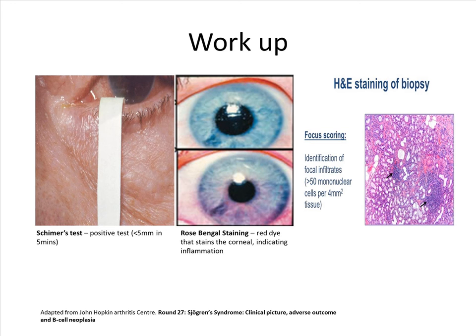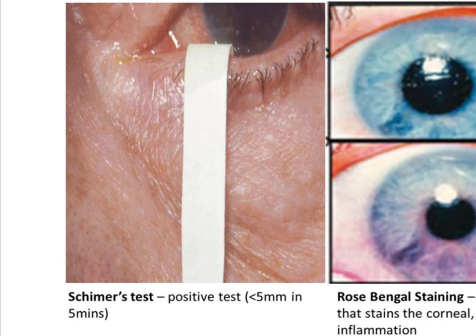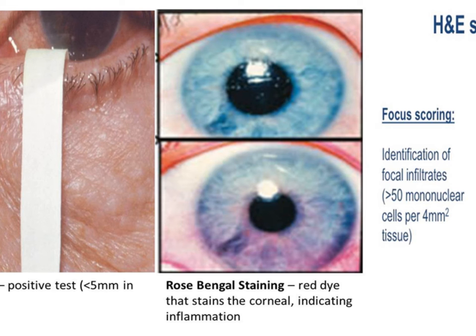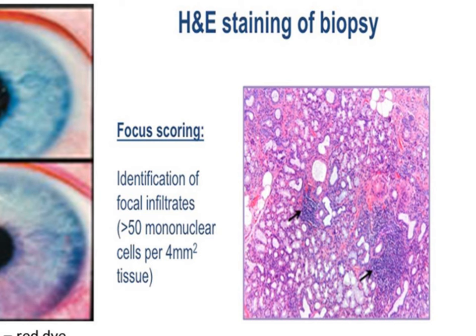Here are some pictures of the Schirmer's test and corneal staining. This is a picture of the Schirmer's tear strip measuring tear production; if the tear production is less than 5 mm in five minutes, this is considered a positive Schirmer's test. This is a picture of rose bengal staining indicating inflammation of the cornea. This is a lip biopsy showing focal infiltrates of more than 50 lymphocytes per 4 mm square tissue.